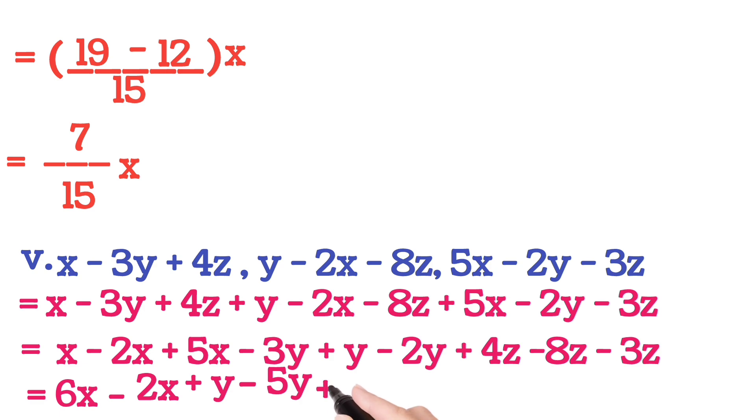Now plus 4Z, you write as it is. Now you see what we have here: minus 8Z minus 3Z. These both are negative, so we will do plus, but sign will come minus. So minus 11Z.